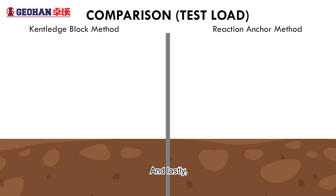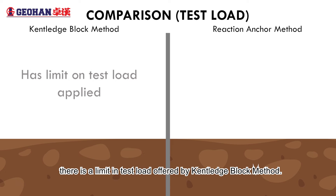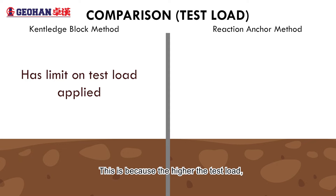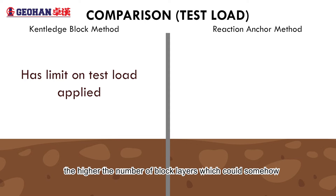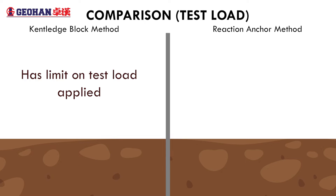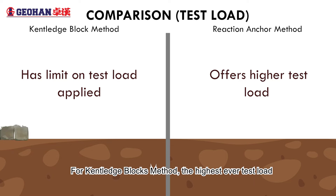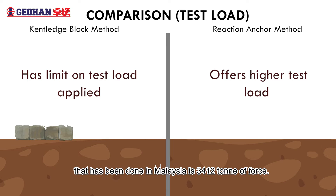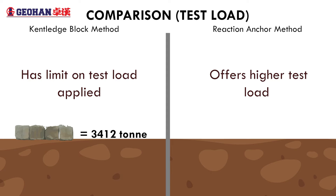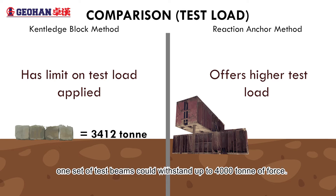Lastly, there is a limit in test load offered by the cantilever block method. The higher the test load, the higher the number of block layers, which could impose instability to the arranged cantilever blocks. For the reaction anchor method, we can provide higher test loads as long as the anchor strength and the test beams can provide the reaction force. For the cantilever blocks method, the highest ever test load done in Malaysia is 3,415 tons of force. And for the reaction anchor method, one set of test beams could extend up to 4,000 tons of force.